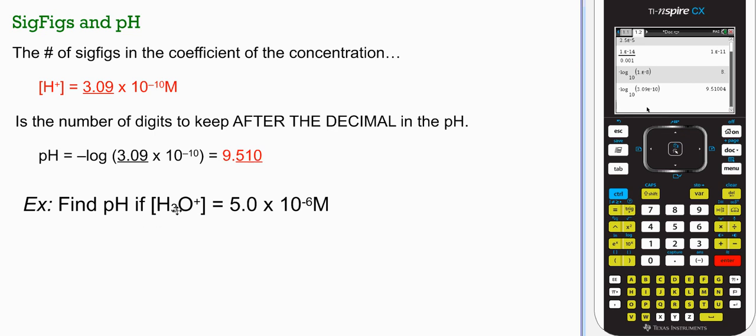Sample question: find pH if the hydrogen ion or hydronium ion concentration is 5 times 10 to the negative 6. Since I've got a concentration, I do negative log 5 double E negative 6. You get 5.3013. Since there were two digits here, I can carry two digits after my whole number. 5.30 would be the pH value.